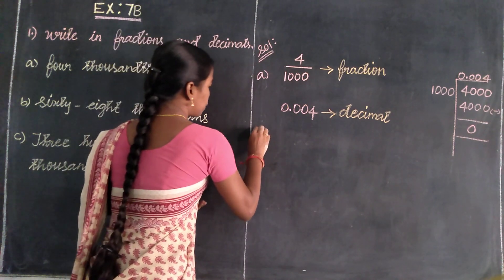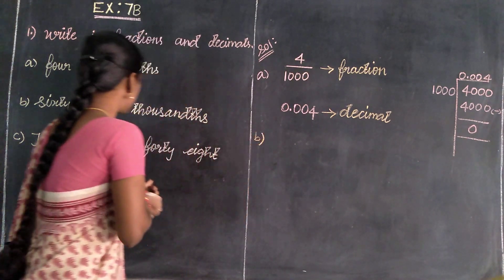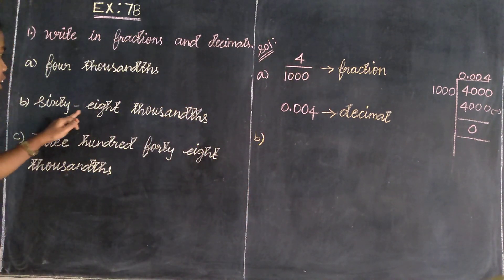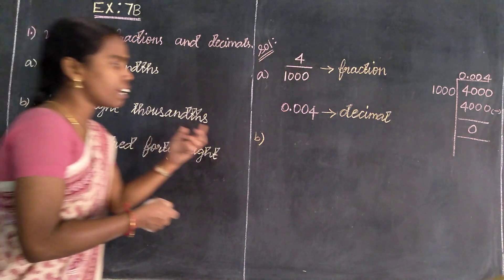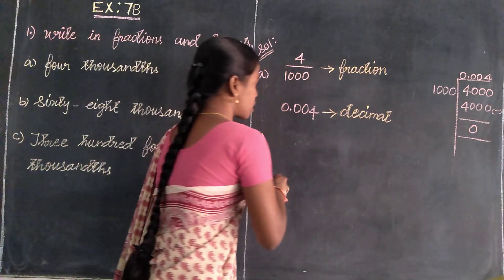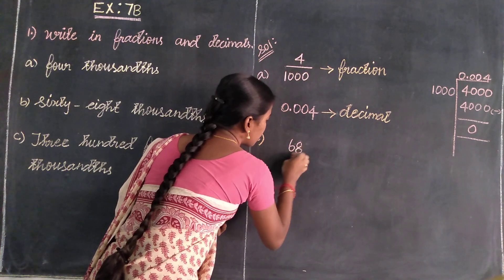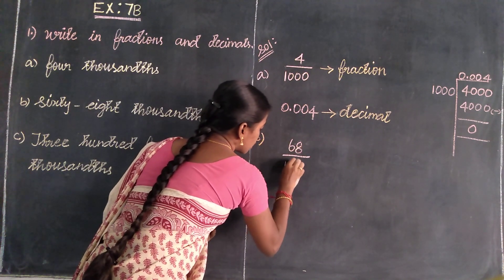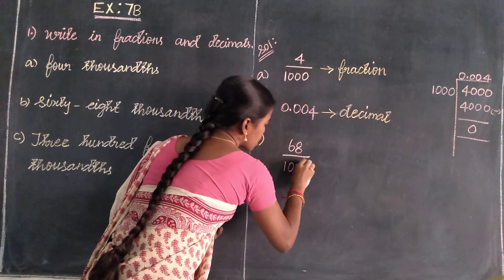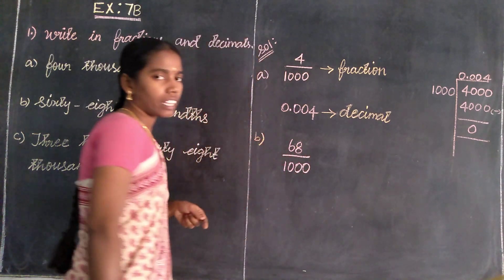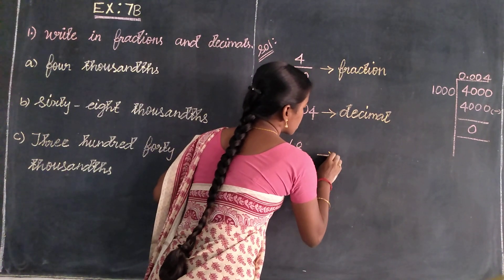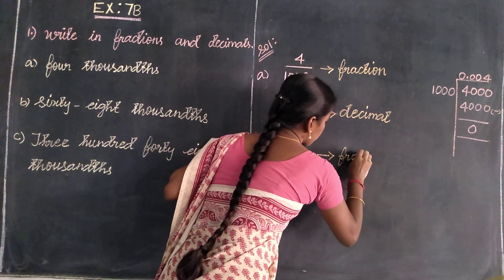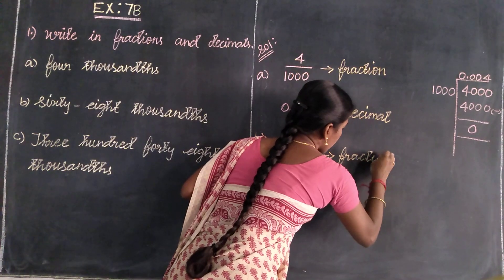Second one, Problem B: 68,000. See — 68 and thousand. Find out the numerator: 68 is the numerator. Divided by thousand — that is the denominator value. So 68 divided by 1,000 is also a fraction. This is a fractional value.